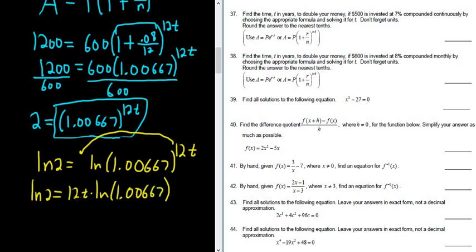So this ends up being the natural log of 2 equals 12t times the natural log of 1.00667. And we're almost done. We're looking for t, so the last thing to do is divide by all of this stuff.